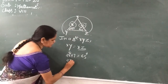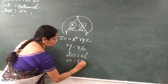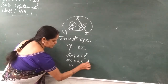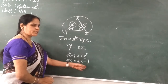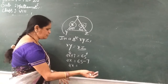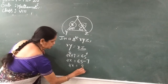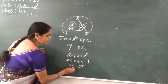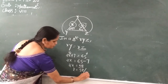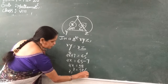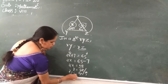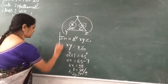So 2X is equal to 65 minus 7. So 2X is equal to 58. Therefore X is equal to 58 divided by 2. So X is equal to 29 degrees.